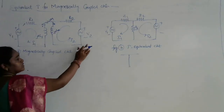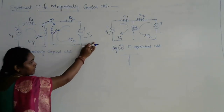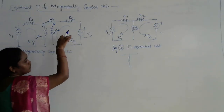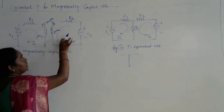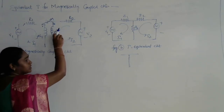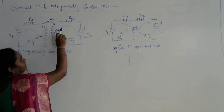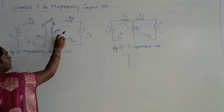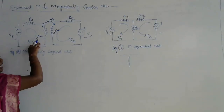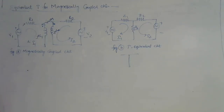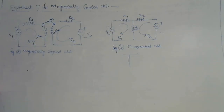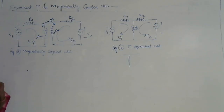Similarly, for the second loop we apply a voltage source V2, causing current I2 to flow, which links with the self inductance coil L2. The EMF induced is due to self inductance. Additionally, because of current I2, some flux links with coil L1, giving rise to mutual inductance jωM. For the first circuit we apply the dot convention method and write the loop equations for loop 1 and loop 2.